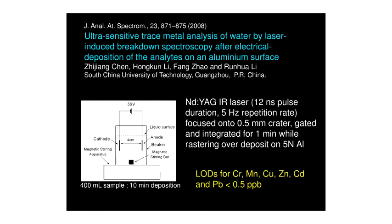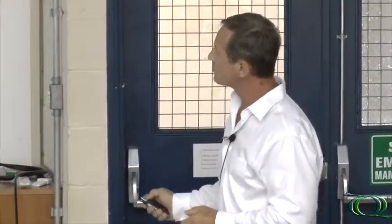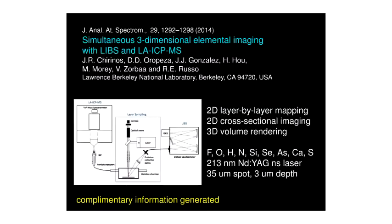Ultrasensitive determination of metals can be achieved with LIBS. Though typical detection limits are parts per million, with a little sample processing — where elements in a liquid sample are cathodically plated onto a clean aluminum substrate, dried, and then the substrate is laser ablated — limits of detection for a number of elements below parts per billion can be readily achieved. Rick Russo has also discussed, in a 2014 paper, the complementary information generated by coupling LIBS in emission mode with transport of the ablated material to an ICP-MS. LIBS provides information on elements such as fluorine, oxygen, hydrogen, and nitrogen not readily available from ICP-MS, while high concentrations that are problematic for ICP-MS recalibration can also be monitored.